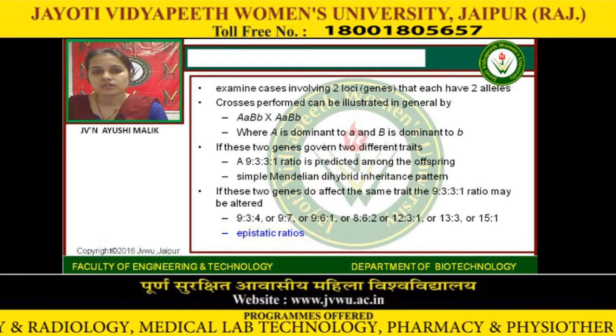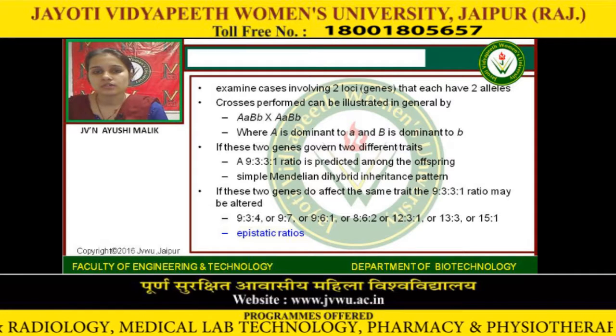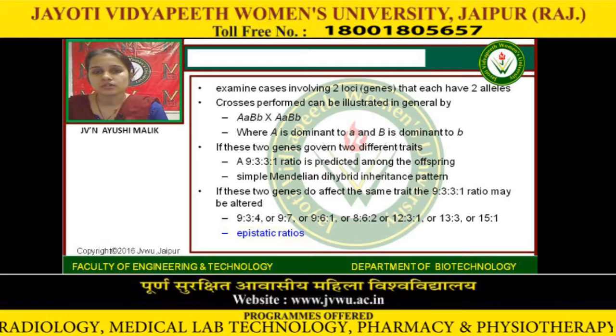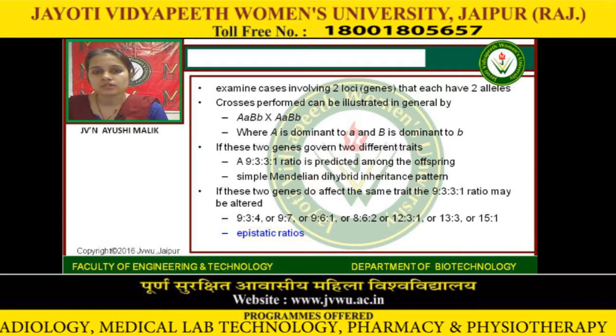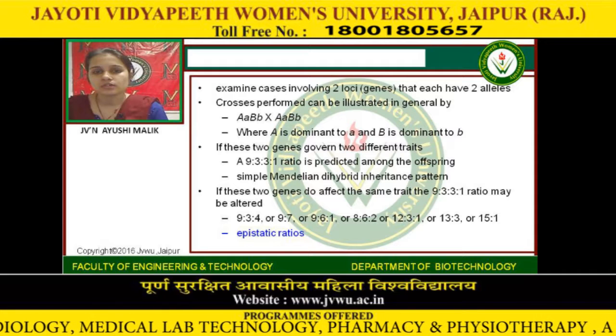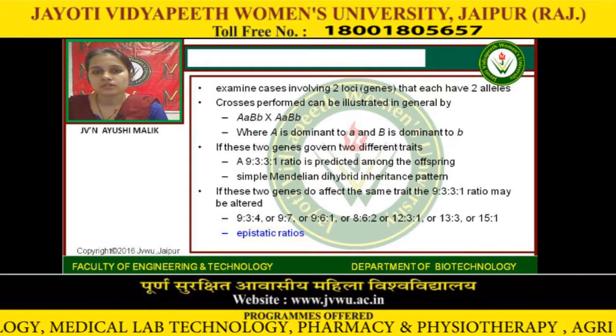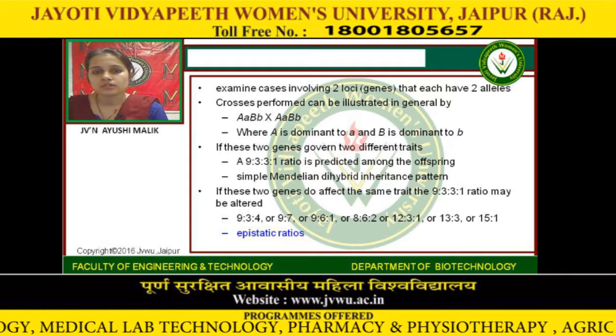If these two genes govern different traits, the 9:3:3:1 ratio is predicted among the offspring. Simple Mendelian hybrid inheritance pattern applies in this case.